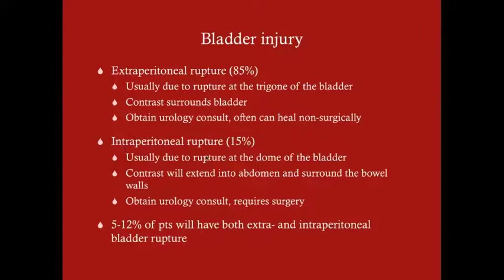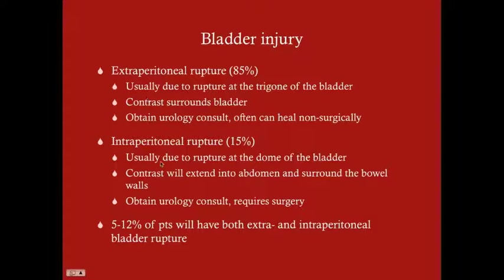Intraperitoneal rupture is less common and is usually due to rupture at the dome of the bladder. Since bowel is above the bladder, contrast will extend into the abdomen and surround the bowel walls - very obvious on cystogram. Obtain a urology consult; this will require surgery. About 5 to 12 percent of patients will have both extraperitoneal and intraperitoneal rupture.